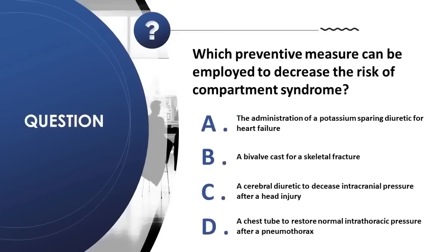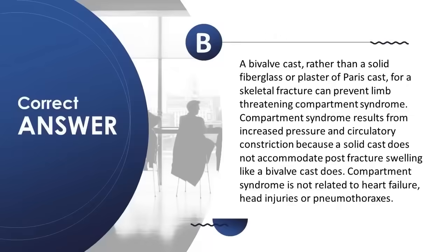Question 22: Which preventive measure can decrease the risk of compartment syndrome? A) potassium-sparing diuretic for heart failure; B) bivalve cast for a skeletal fracture; C) cerebral diuretic after head injury; D) chest tube after pneumothorax. Correct answer is B. A bivalve cast rather than a solid cast for a skeletal fracture can prevent compartment syndrome, which results from increased pressure because a solid cast does not accommodate post-fracture swelling. Compartment syndrome is not related to heart failure, head injuries, or pneumothoraxes.